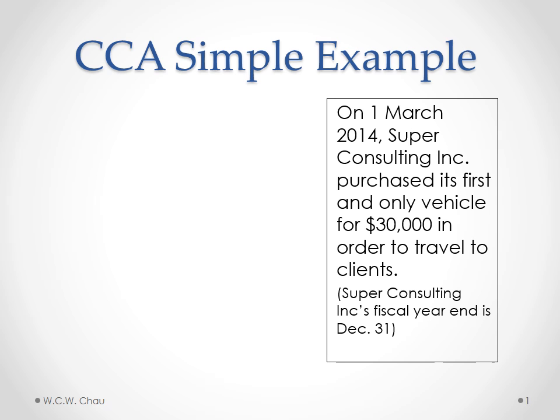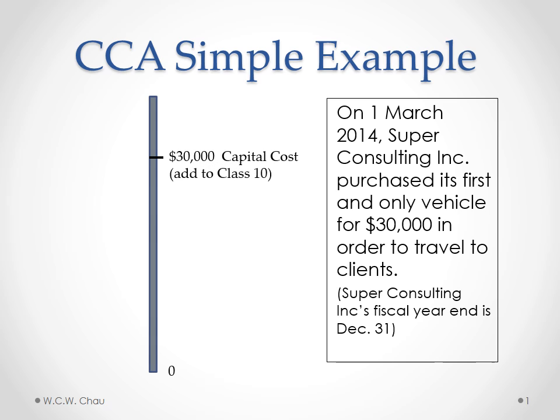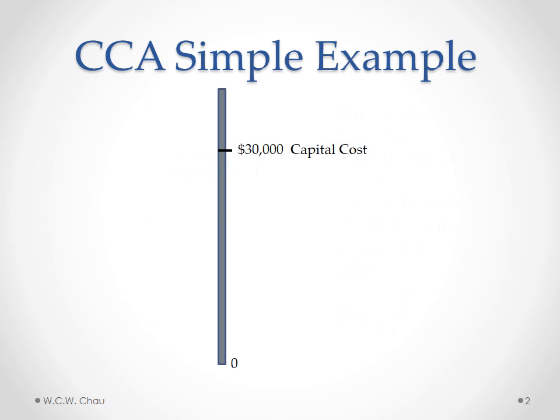We have a simple example here involving a company called Super Consulting, which in 2014 has purchased its first and only vehicle for $30,000. We are assuming that Super Consulting's fiscal year end is December 31st. So let's put that $30,000 capital cost into the Class 10 CCA balance for Super Consulting. Class 10 is the class that applies to a motor vehicle under the CCA rules, and the one and only asset in that Class 10 balance is this vehicle costing $30,000.